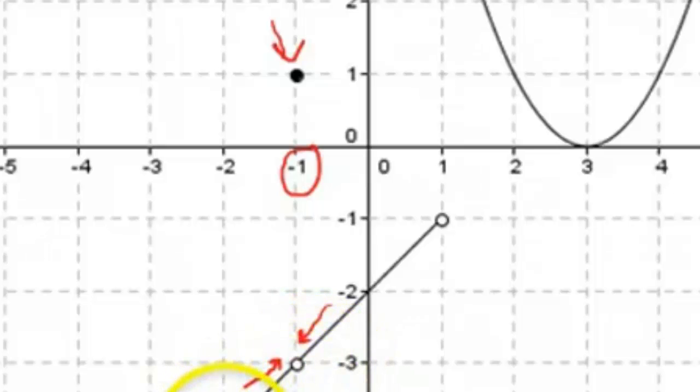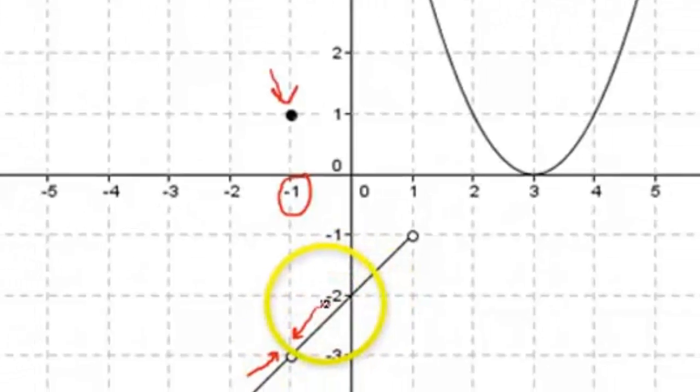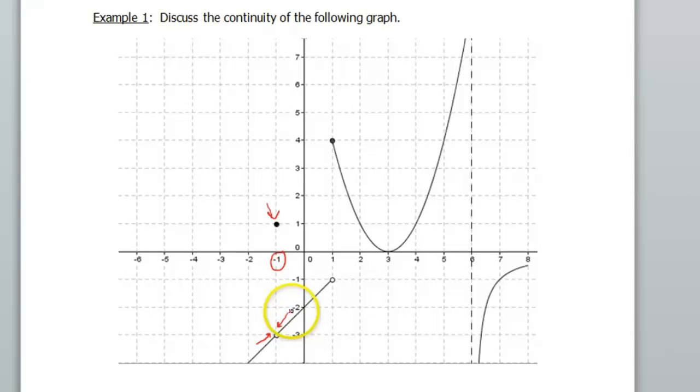As you were drawing this graph from left to right, you'd have to make a hole, pick up your pencil, put the dot in up here, go back, finish your graph. So it's kind of a good intuitive feel as well. Why don't you pause the video for just a second and see if you can identify any other points on the graph where the function is not continuous.